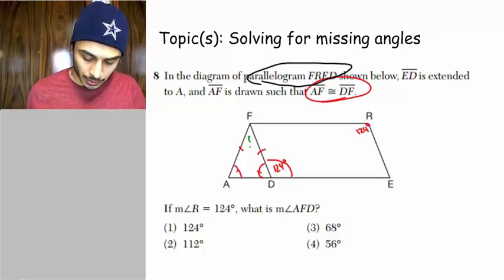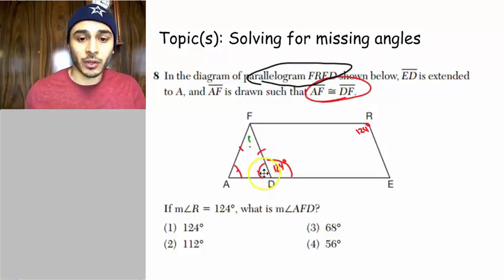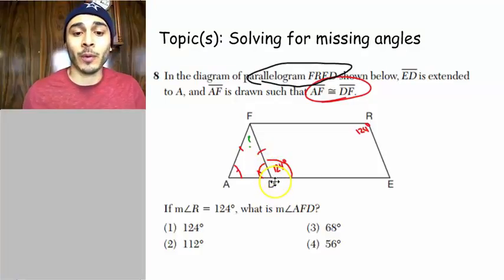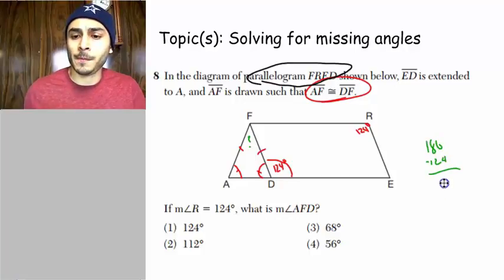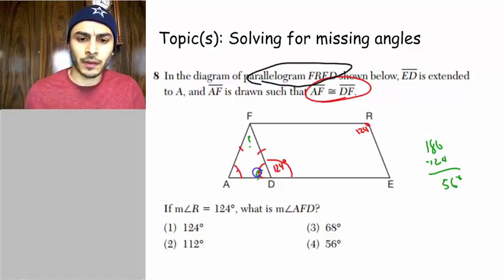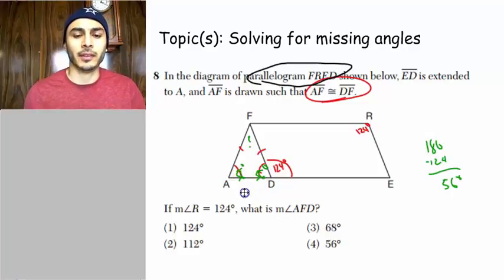And now if that's 124, then the angle adjacent to it right here, angle FDA must be supplementary, right? Because we have a linear pair. So then we go ahead and say, what's 180 subtract 124, and then that would be 56. So this is 56 degrees. And then this is also 56 degrees because it's isosceles.